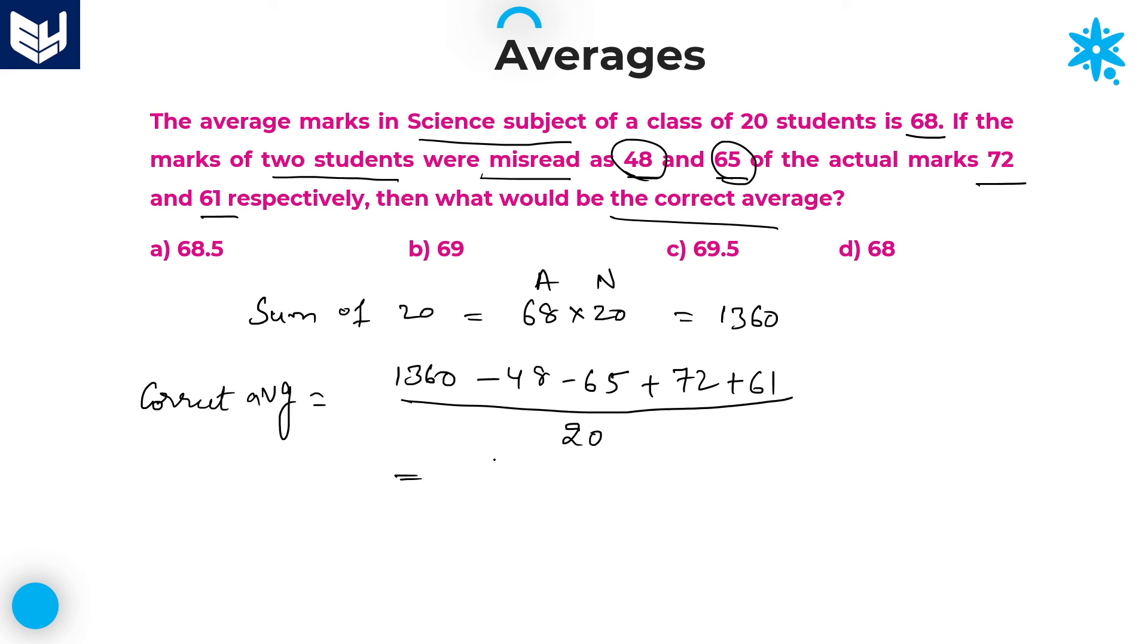You can take 1360 divided by 20 directly, which gives you 68, and change in average is important. Denominator is 20. As in the previous problem, change in average: the sum of these two, 72 and 61, which equals 133, minus 48 minus 65, that is minus 113. So this value becomes minus 113 plus 133, which gives you plus 20. 20 by 20 equals 1. 68 plus 1 equals 69. 69 is the correct average. Option B is the right answer for this question.